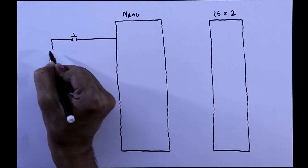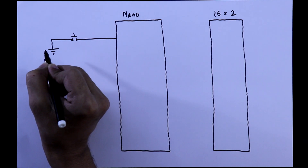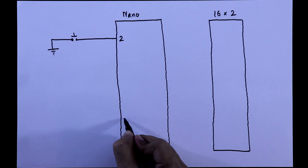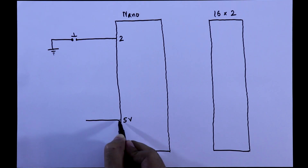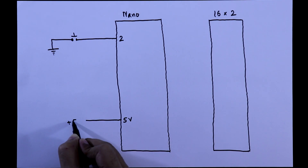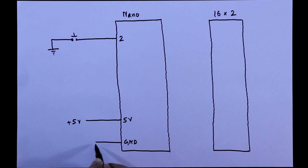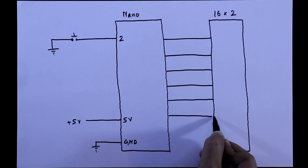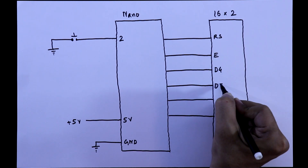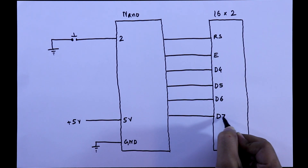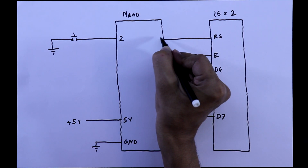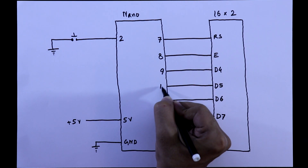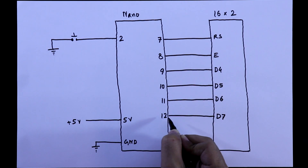The other side of the switch is connected to the ground, and this switch is connected to pin number 2 of Arduino. The 5V pin of Arduino is connected to plus 5V and the ground pin to ground. Now we have to connect the display with the Arduino. This 6-pin connector will be connected to the Arduino: pin 7, 8, 9, 10, 11, and 12.